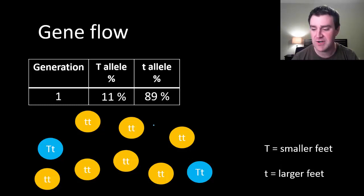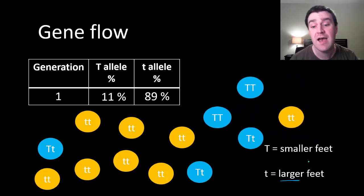I just made up a totally different example here. Let's say most individuals in our populations have the phenotype of having larger size feet. But if several individuals of the same species come into the population and most of them have smaller feet, then if they come in and reproduce...